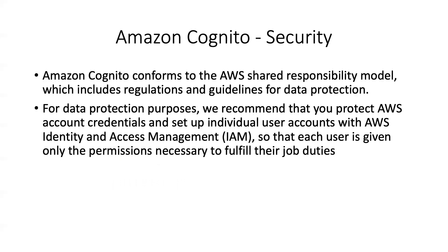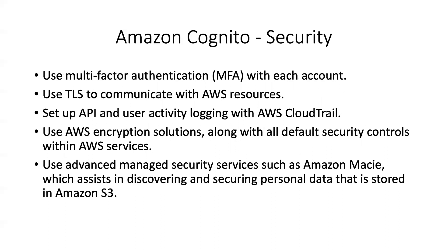Some security best practices: Amazon Cognito conforms to the AWS shared responsibility model and includes regulations for data protection. Always use multi-factor authentication with each AWS account. Always use TLS to communicate with AWS resources. Set up API and user activity logging using AWS CloudTrail. Use AWS encryption solutions along with default security controls within AWS services for encryption at rest and in transit — you can use KMS or CloudHSM. Use advanced managed security services such as Macie that detects and classifies personally identifiable information in your S3 bucket or CloudTrail logs.